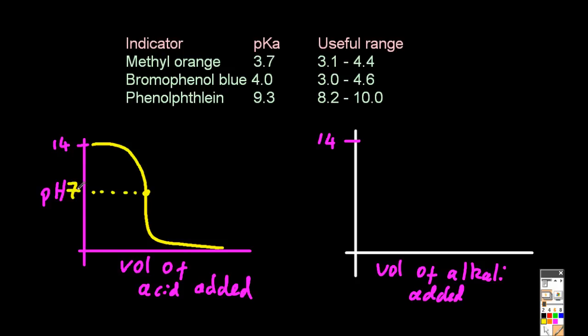So an indicator with a PKA of 7 would be perfect for this one, but none of the three indicators shown would work. The PKA isn't close to 7, and a useful range for none of the three contains 7.